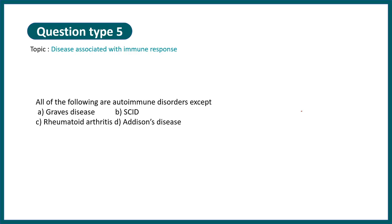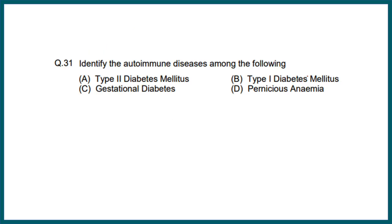Question type 5 is more rare but deals with diseases associated with the immune system. They generally ask: all of the following are autoimmune disorders EXCEPT — Graves' disease, SCID, rheumatoid arthritis, or Addison's disease? The correct option is SCID, which is an immunodeficiency disease and not an autoimmune disease. Autoimmune disease means your immune system is hyperactive and causing harm to your own body.